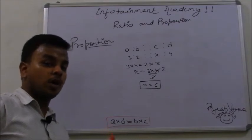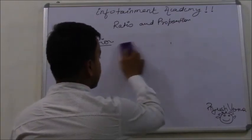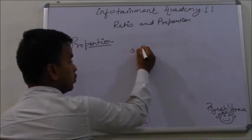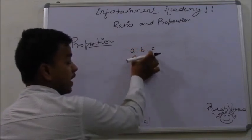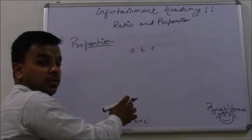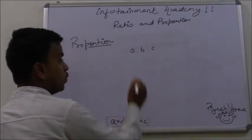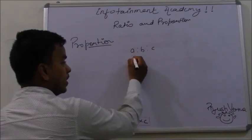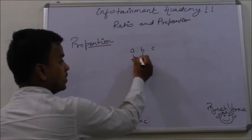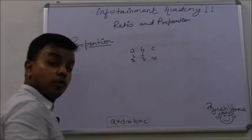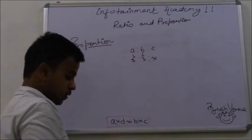Now, moving on to a slightly tricky question. If it is given A is to B is to C, here are only 3 things in proportion with each other, and you are having only the value of 2. A is given 5, B is given 7, and C is not given, let's say X. Now, you have to find the value of X. How will you do it?